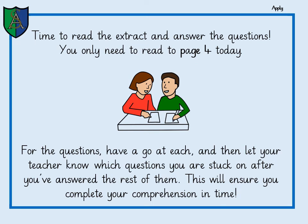First of all, remember to read through the text. At the beginning you're just skim reading to get a general idea of what's going on and where certain events happen. Have a go at each of the questions first and then let your teacher know which questions you are stuck on after you've answered the rest of them. So if you're stuck on a question — for example, number three — have a little go first, then move on and complete the rest of the questions. It's a lot quicker to message your teacher once you've completed your comprehension and say 'I wasn't sure on questions three and eight', and then your teacher can help you with those.